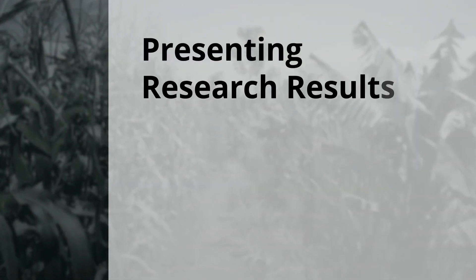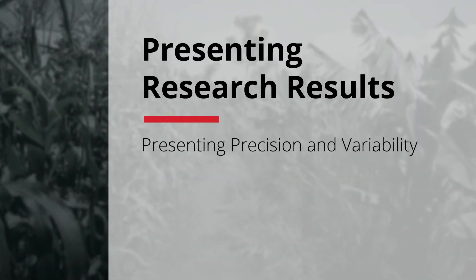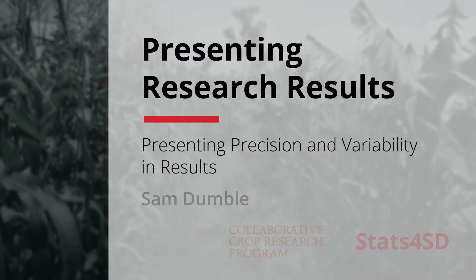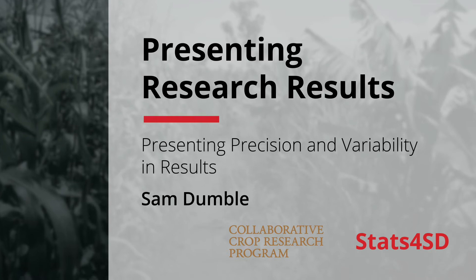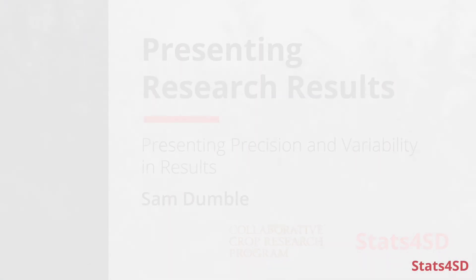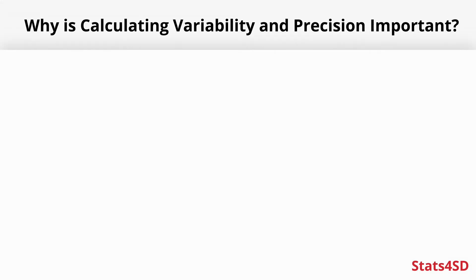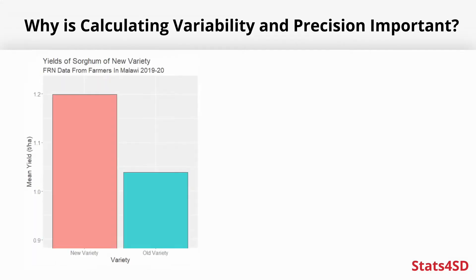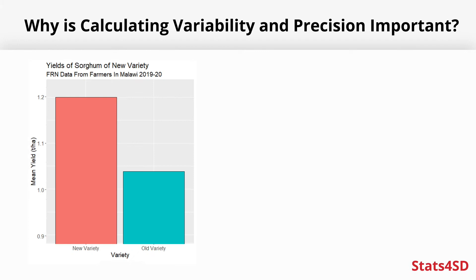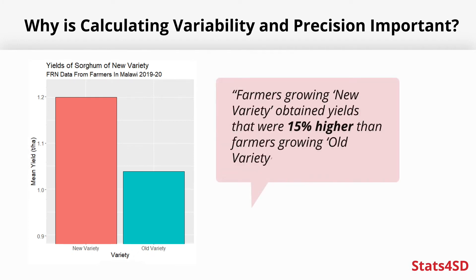When we present our results, we can often get a little bit carried away and only really focus on the big exciting new findings. For example, our exciting new variety of sorghum. We've crunched it into our analysis and found out that we have a significant improvement in the yields for the new variety compared to the older variety, and we've got yields that are 15% higher.